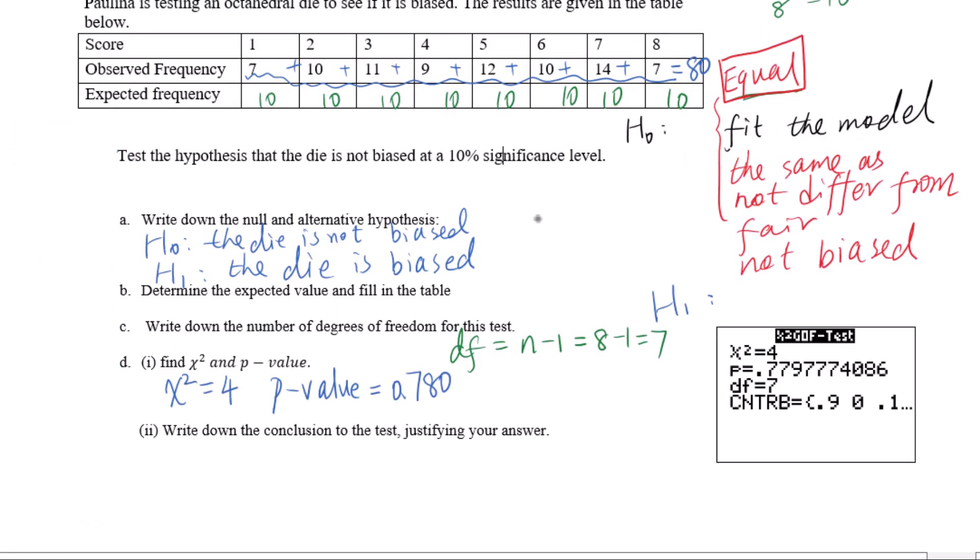Check the significance level of 10%. Draw the chi-square curve with the rejection region at 0.1. Since 0.780 is greater than 0.1, there is insufficient evidence to reject H0.